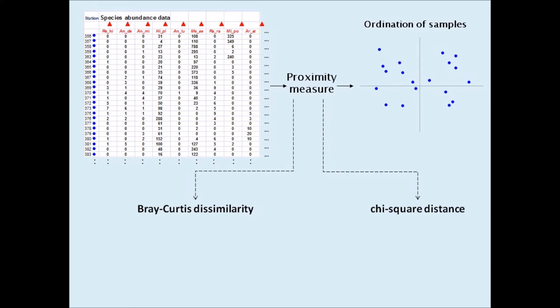The chi-square distance, which underlies correspondence analysis and canonical correspondence analysis, or CCA, operates on relative species abundances or relative biomass.